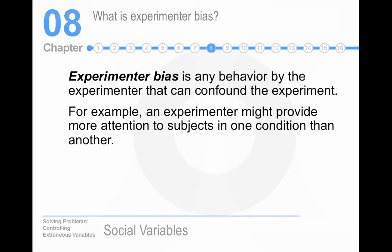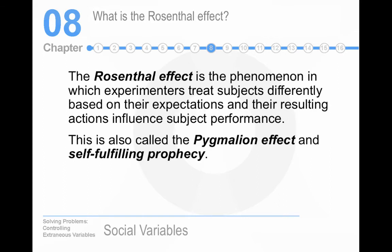Experimenter bias occurs because as experimenters, we want to see our experimental hypotheses fulfilled. This leads to publications, which leads to promotion, grants, tenure, etc. — all the things that make life worth living. Publish or perish, that's what we say.